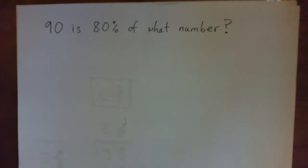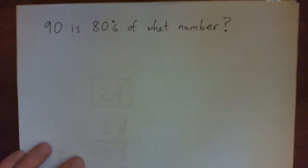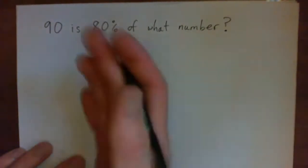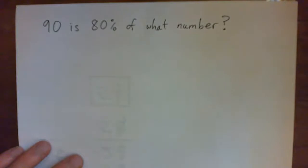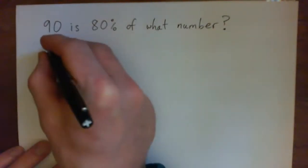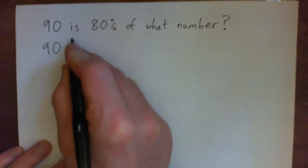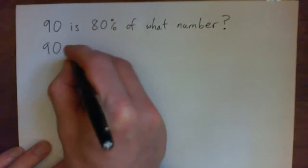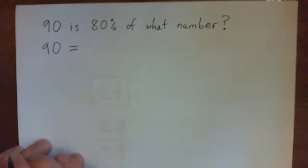So, what we're going to do is turn the sentence into a little equation and then we're going to solve the equation. But there's other ways of doing this, but we'll do it that way for fun. So, we're going to write 90 and is can be turned into an equal sign. Is is the same thing as equals.